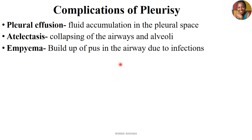The complications of pleurisy include pleural effusion — fluid accumulation in the pleural space — and atelectasis, which refers to collapse of the airways. Atelectasis occurs more so when the fluid is too much and occupies the airways, causing the alveoli to collapse. There is also empyema, which is the presence of pus in the airways due to infection. If pleurisy is prolonged or exists for an extended period of time, it can cause excess pus formation that builds up in the area, causing empyema.